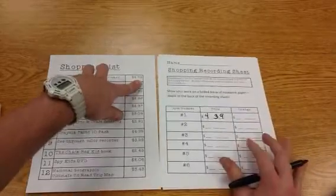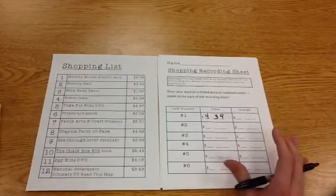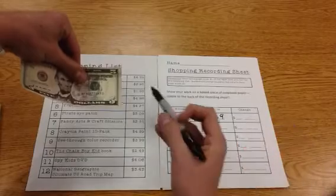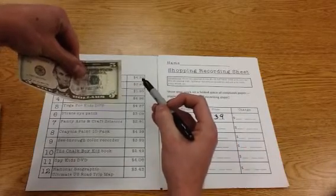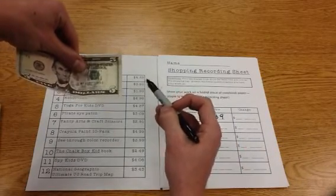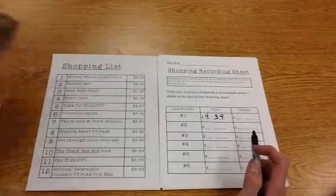So now I've written down the price of those ears, and I'm going to pay the cashier $5 for those ears that only cost me $4.39. So let's find out how much money Mr. Zortman should be getting back.